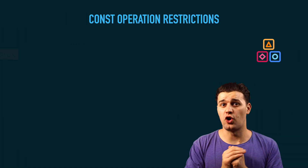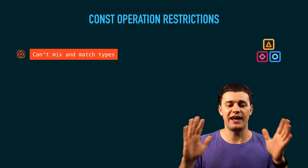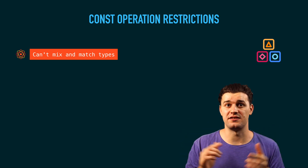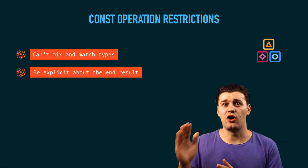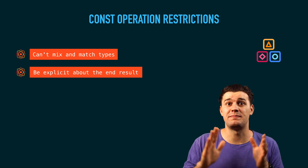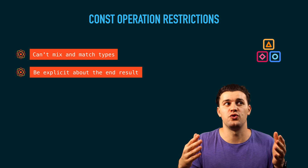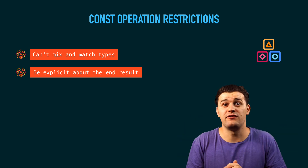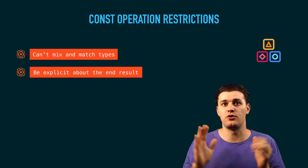When it comes to constants in Go, the operations applied between constants are very strict. You can't mix and match types when using constants. In Go you also have to be explicit about the end result — you can't add a constant of one type with a constant of another type; it's going to give you an error. You have to do a conversion or apply an operation that both types satisfy, otherwise it's going to give you an error.